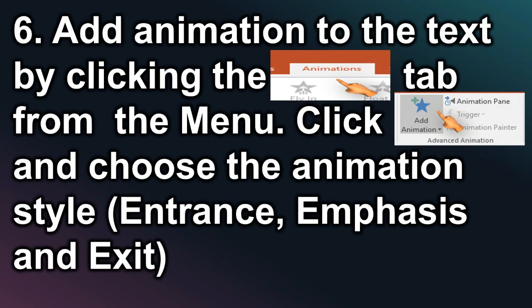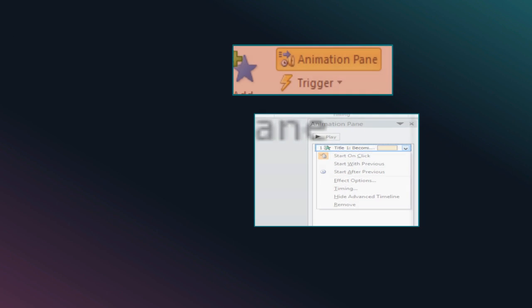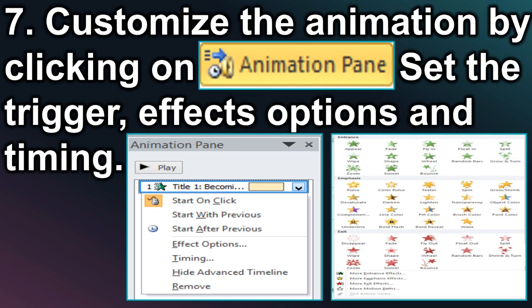Sixth, add animation to the text by clicking the Animation tab from the menu. Click Add Animation and choose the animation style. It may be in Entrance, Emphasis, and Exit. Seventh, customize the animation by clicking on the Animation pane. Set the Trigger, Effects Options, and Timing.